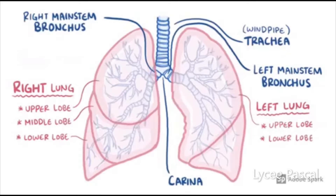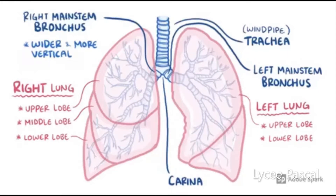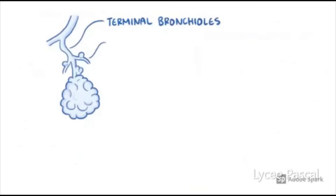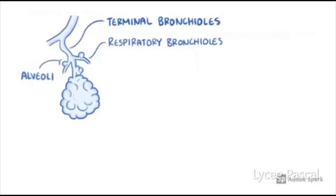The right bronchus is wider and more vertical. The bronchus is divided into smaller bronchioles, which end up with tiny sacs called alveoli, or singular alveolus. This is the final destination of the inhaled air.